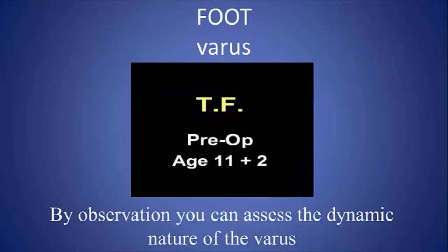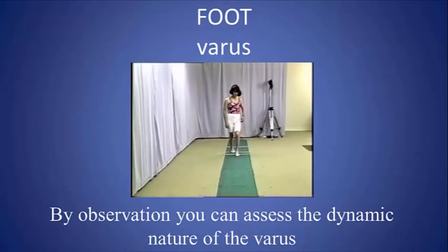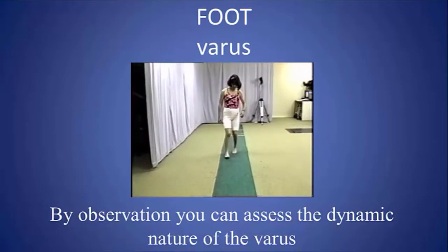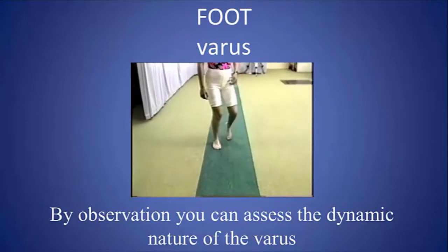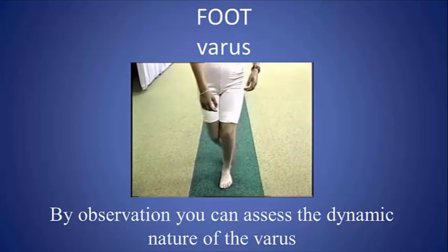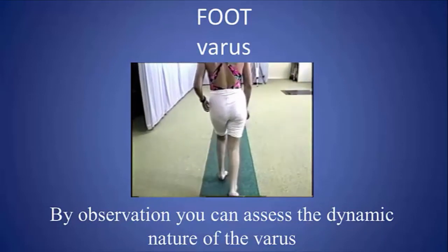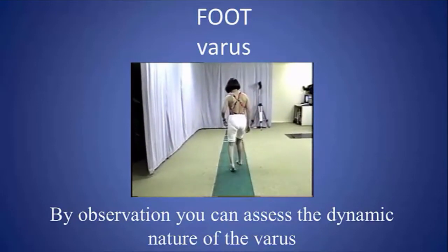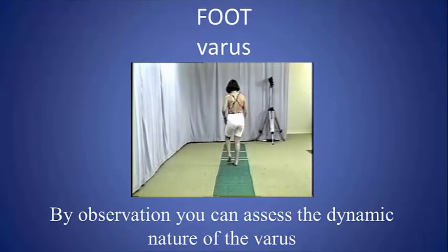Varus, on the other hand, is an active deformity. This is characteristic in hemiplegic patients — not diplegic patients — and is due to overactivity of the tibialis posterior, frequently accompanied by other deep posterior compartment muscles as well as the gastrosoleus.